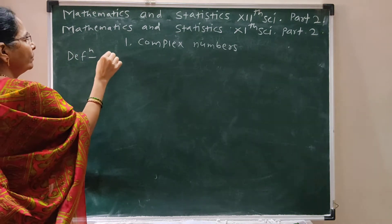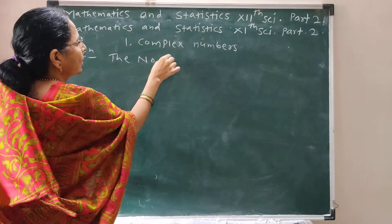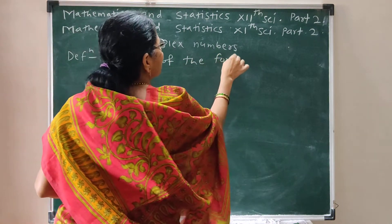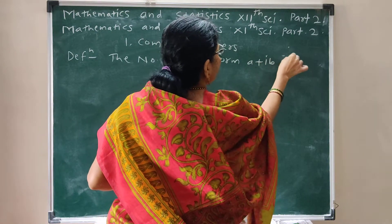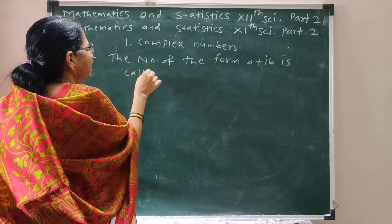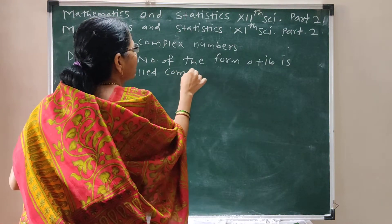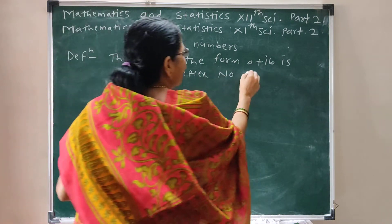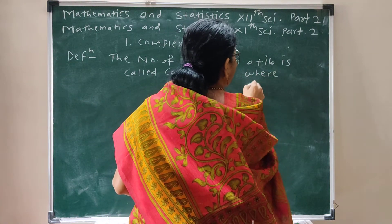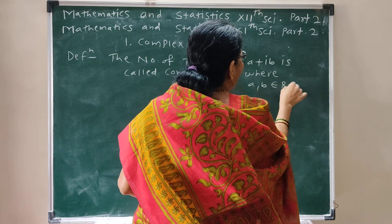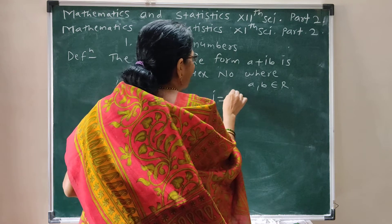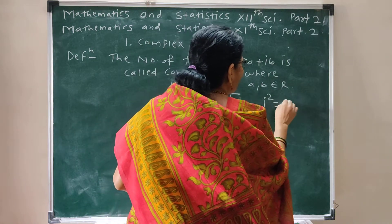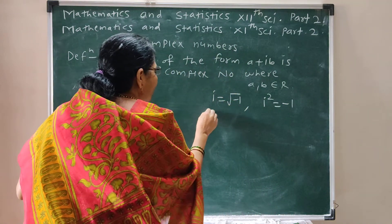Definition: A number of the form A plus iB is called a Complex Number, where A, B belong to R, i is equal to root of minus 1, i squared equals minus 1. This is denoted by Z.